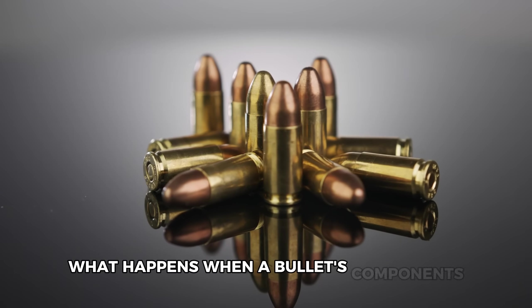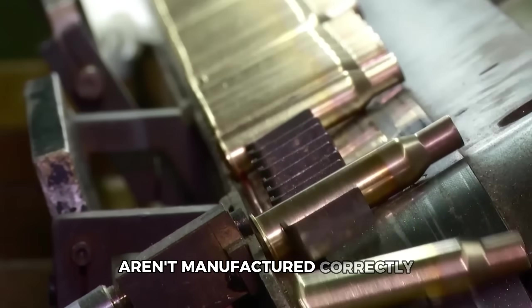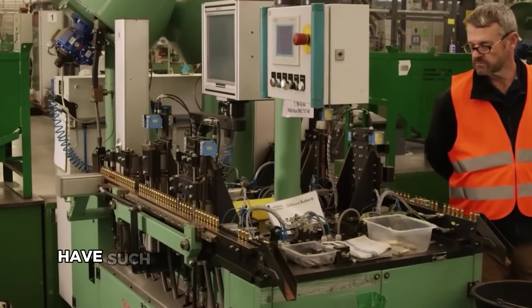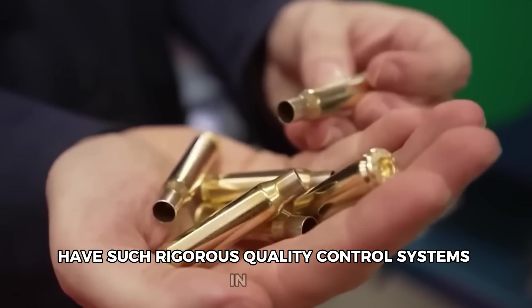What happens when a bullet's components aren't manufactured correctly? Catastrophic failure. That's why ammunition factories have such rigorous quality control systems in place.